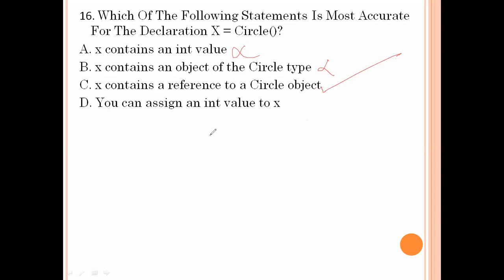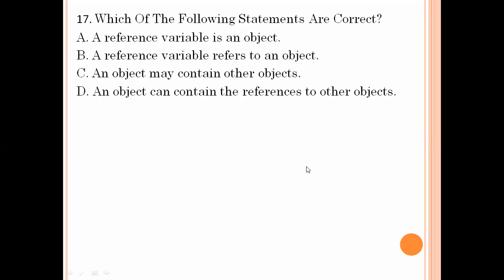Which of the following statements are correct? A reference variable is an object — that is not correct. A reference variable refers to an object — this is the correct one. Option number B is the right answer.